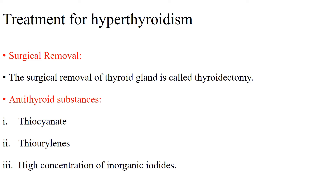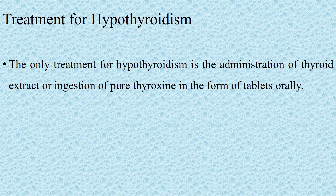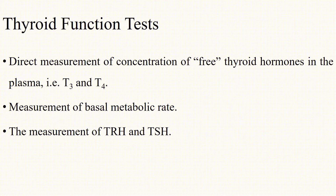Treatment for hyperthyroidism: hyperthyroidism can be treated by antithyroid substances. However, in advanced cases the thyroid gland must be removed. The surgical removal of the thyroid gland is called thyroidectomy. The three well-known antithyroid substances are thiocyanate, thiouracils, and high concentration of inorganic iodides.